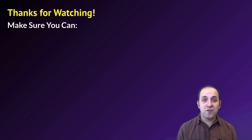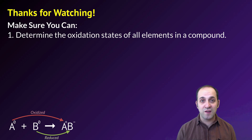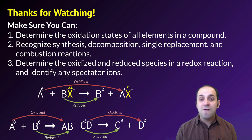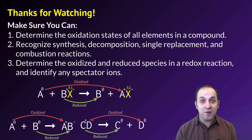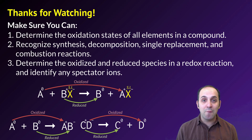Thanks so much for watching our discussion of redox reactions. Make sure that you can determine the oxidation states of all elements in a compound, and that you can recognize synthesis, decomposition, single replacement, and combustion reactions on tests and quizzes. Also make sure that you can determine the oxidized and reduced species over the course of a redox reaction and identify any spectator ions. Remember: if the oxidation number of a substance goes up, it is being oxidized; if it goes down, it's being reduced; and if it doesn't change, it's a spectator. If you have any questions, leave them in the comments below or get in touch with me. Thanks for watching — have a great day.